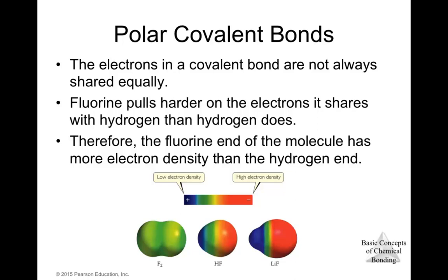You can have non-polar covalent bonds and polar covalent bonds, but never a polar ionic bond — because in ionic bonding you're transferring the whole electron from the metal to the non-metal, not sharing. So polar vs. non-polar only applies when discussing covalent bonds.